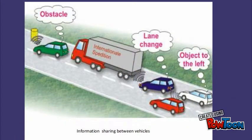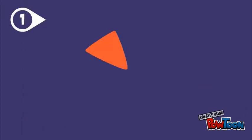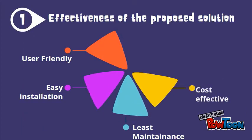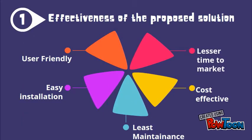So if the vehicles are installed with our device, all the above scenarios can be avoided easily as they can communicate with each other and make the next move accordingly. Now coming to the effectiveness of the solution, it is cost effective, user friendly, least maintained, and easy to install. The most important thing is less time to market as all the modules are available.